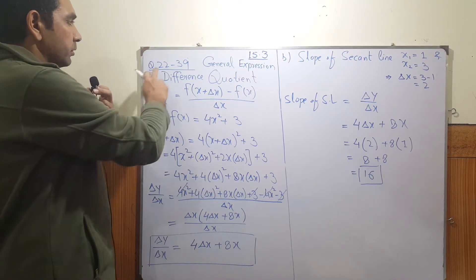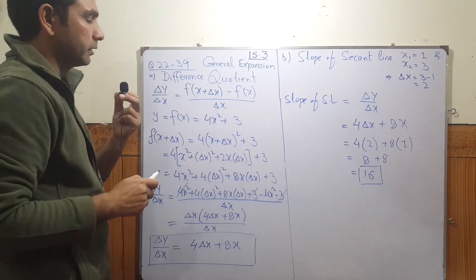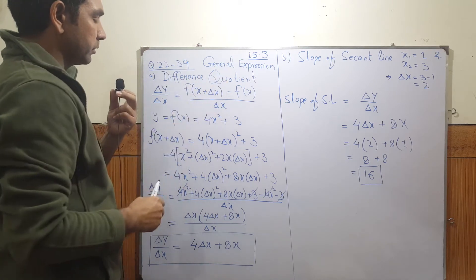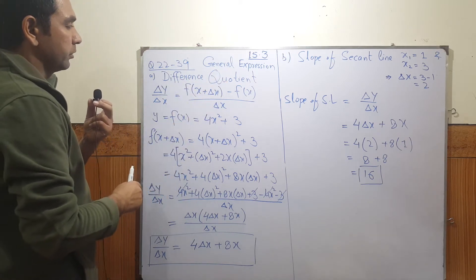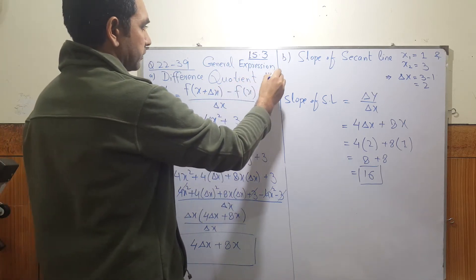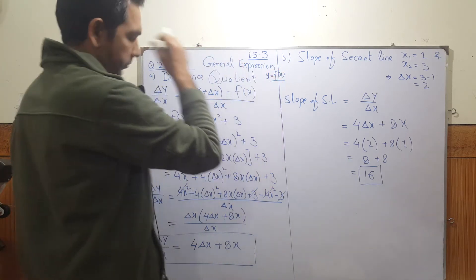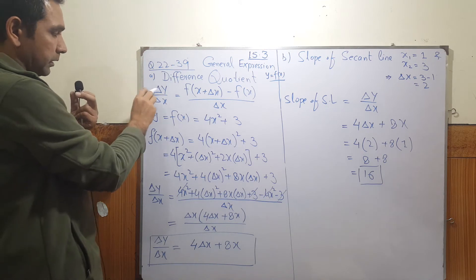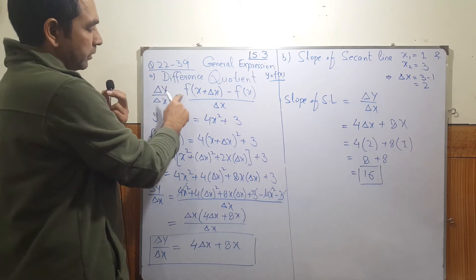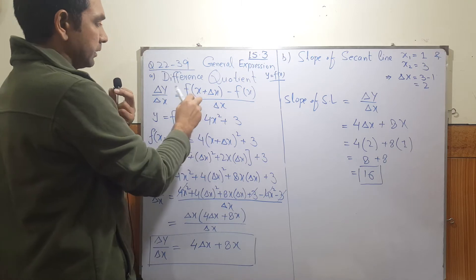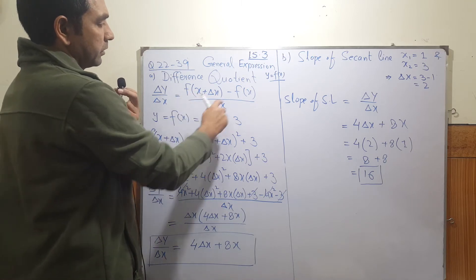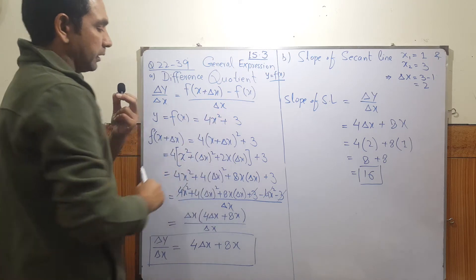A question from 22 to 39. They're asking you to find the general expression for the difference quotient of a function f of x, where y equals f of x. That can be defined by delta y divided by delta x equals f of x plus delta x — we replace x by x plus delta x — and minus f of x, divided by delta x.